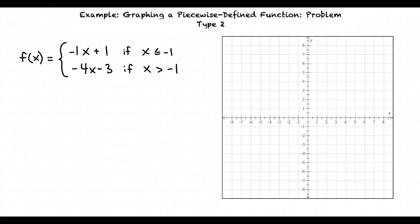We can begin by graphing negative x plus 1. It is important to notice right away that our slope is negative 1, because the coefficient of x is negative 1, and our y-intercept is 1, because our constant is 1.